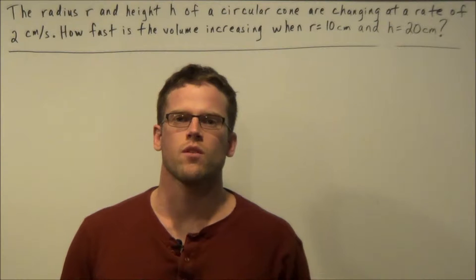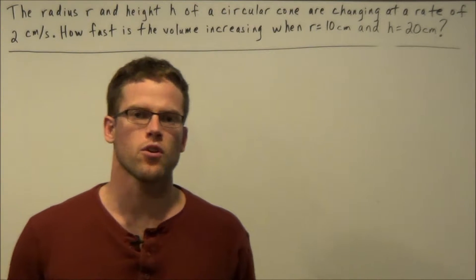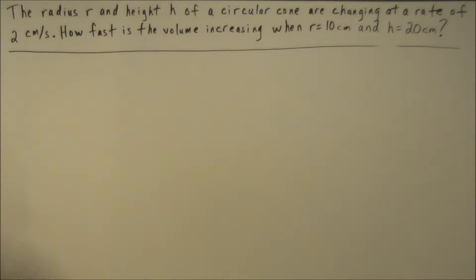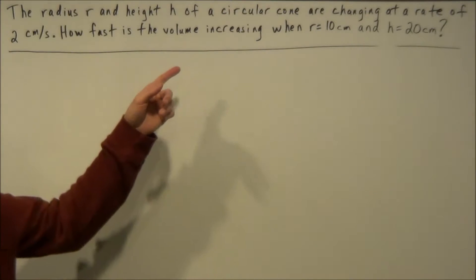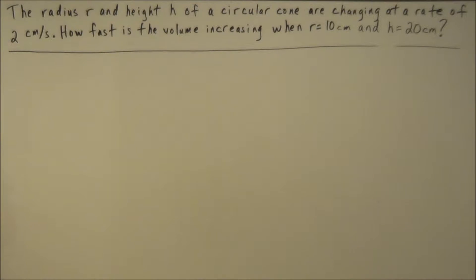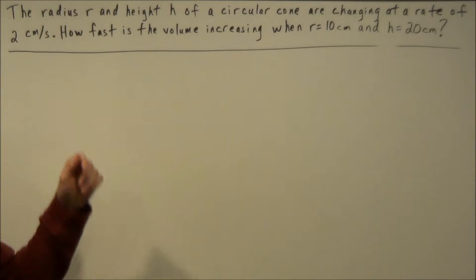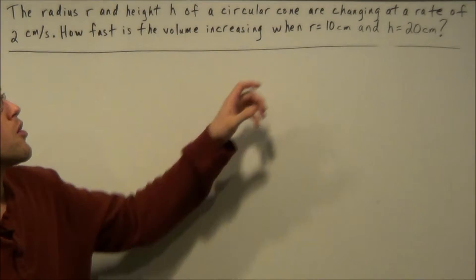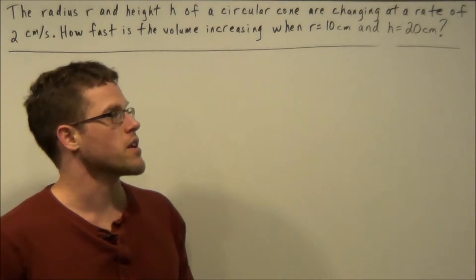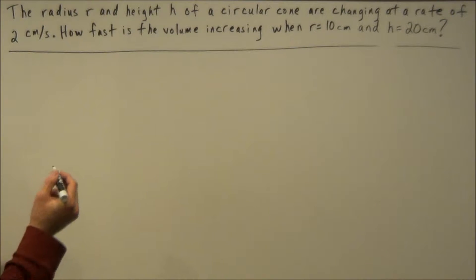Hi, my name is Vincent and today I want to take a look at a related rate cone problem. The radius r and height h of a circular cone are changing at a rate of 2 centimeters per second. How fast is the volume increasing when r equals 10 centimeters and h equals 20 centimeters?